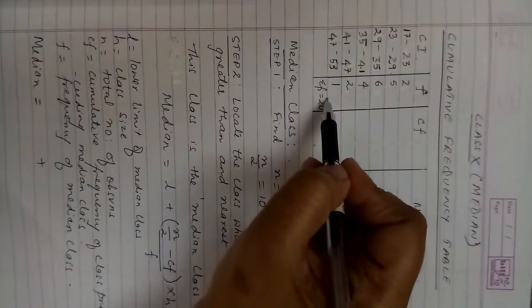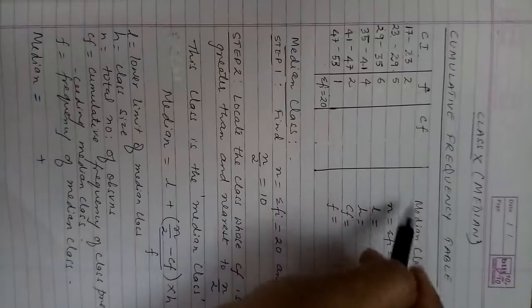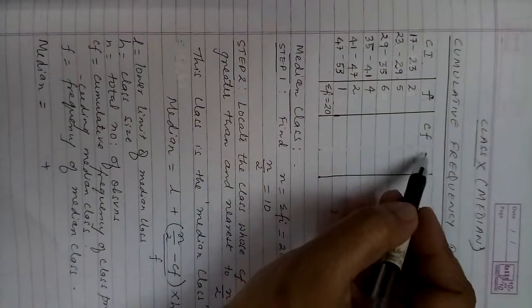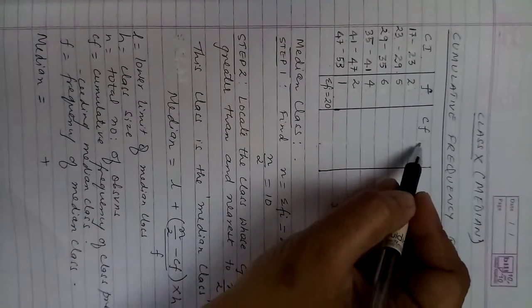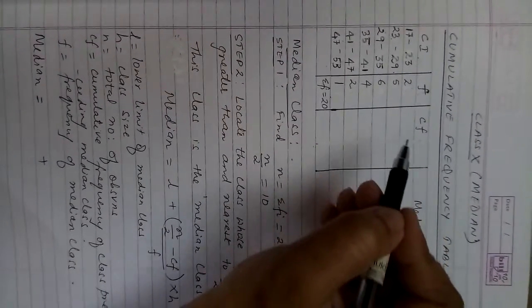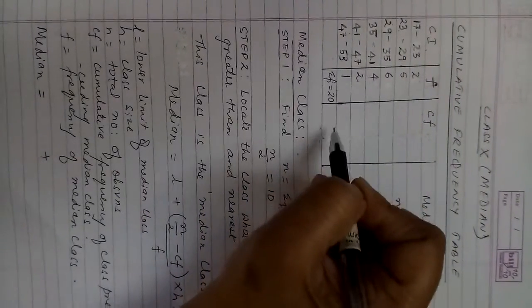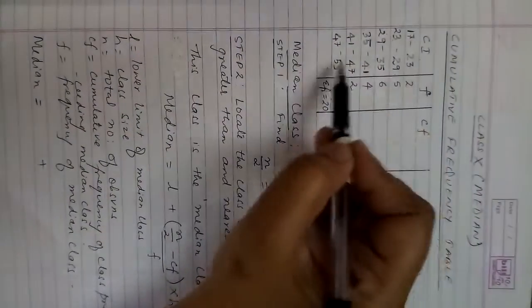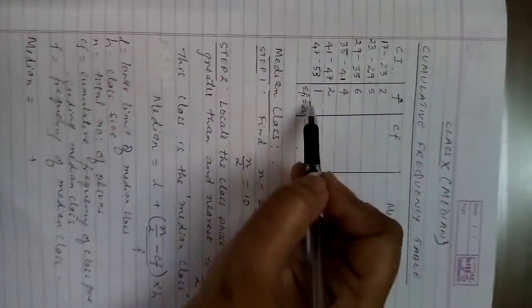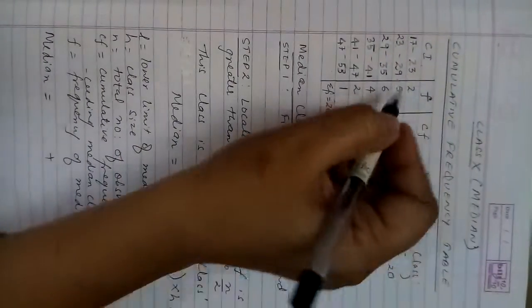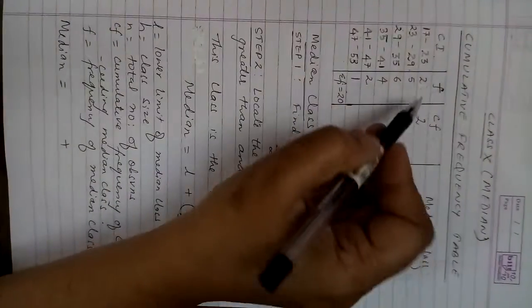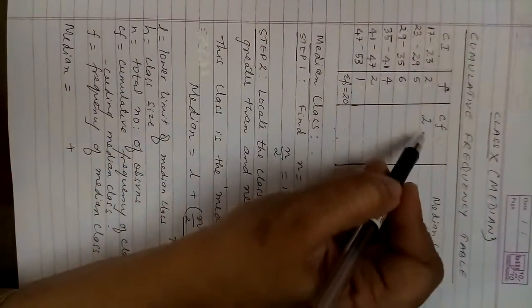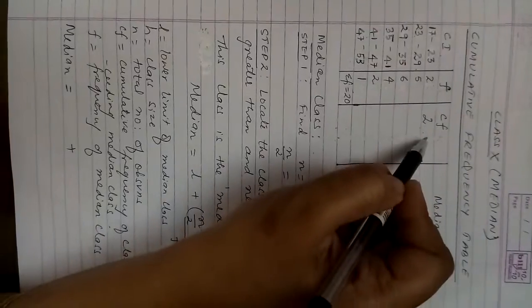The median doesn't involve many columns — you just have to make one more column: CF, which means cumulative frequency. The method is: after writing the class intervals and frequencies, the first CF is simply the first value of F. So if the frequency is 2, the first cumulative frequency is also 2.